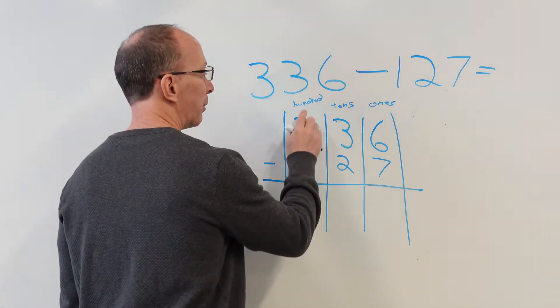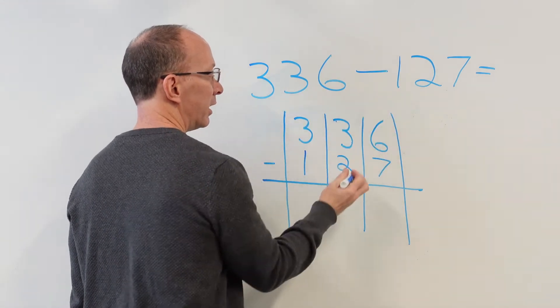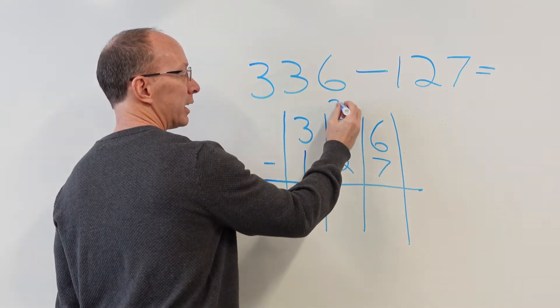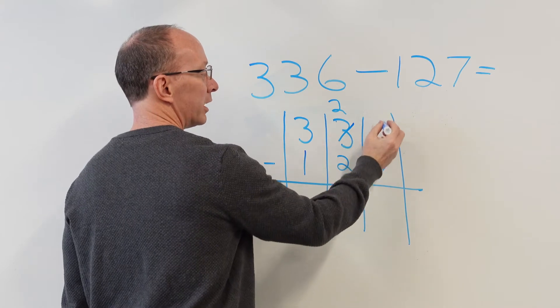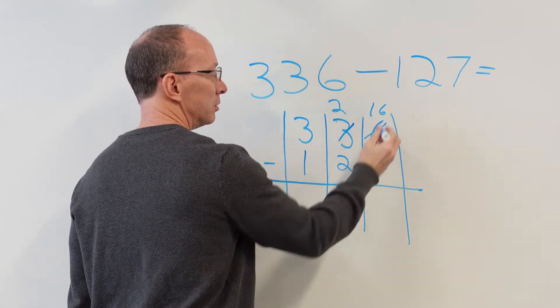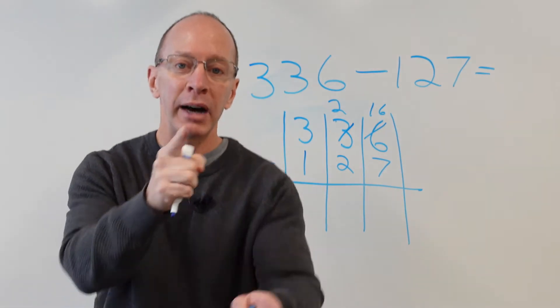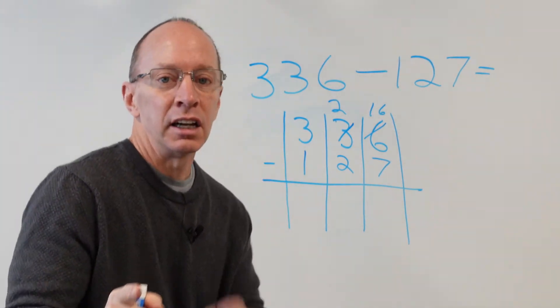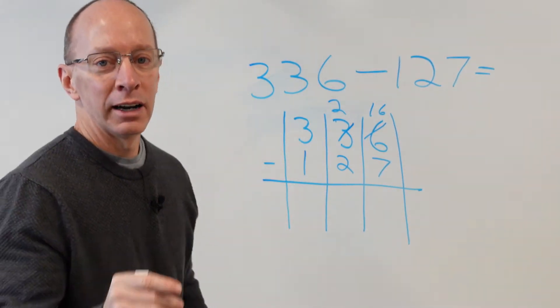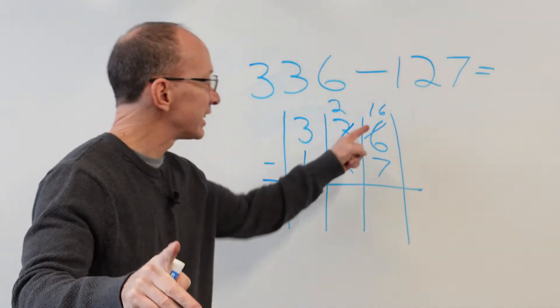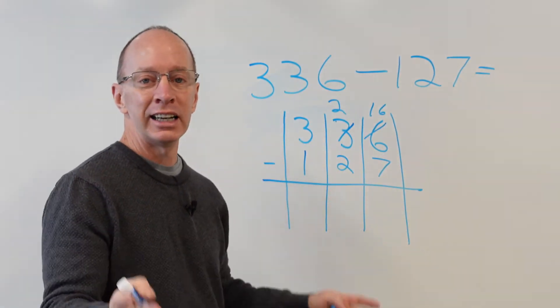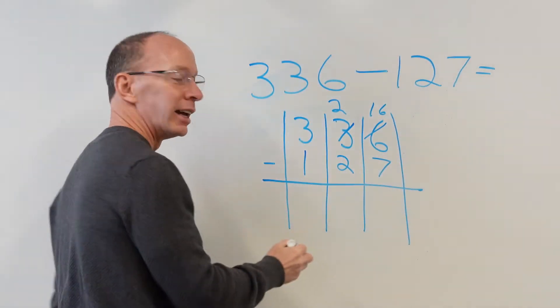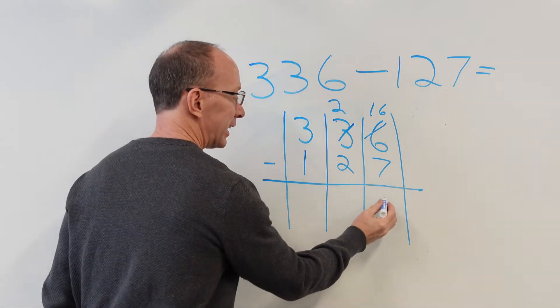So I'm going to erase the hundreds and tens part here. I'm going to borrow one from the three, make that a two, bring that 10 over here. And that turns into 16. Now I can do it. 16 minus seven, sin from heaven. I'm still working on that song. But anyway, 16 minus seven. What is it? Nine. That's right. I heard that person back there say nine.